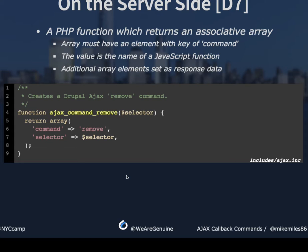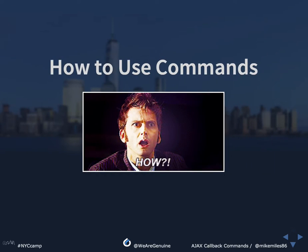Here we have the ajax_command_remove function on the server side. It's a function provided by Drupal called ajax_command_remove, and all it returns is a basic associative array where it specifies the command of 'remove' — which maps to the JavaScript function — and passes the CSS selector to know what object to remove. Really basic on both the server side and client side. That's what Ajax commands are: what gets returned from an Ajax request.